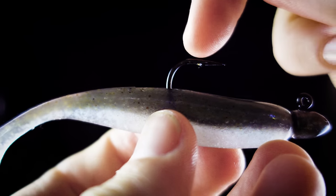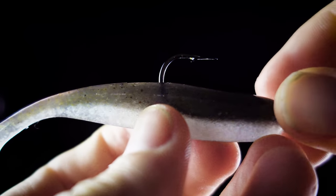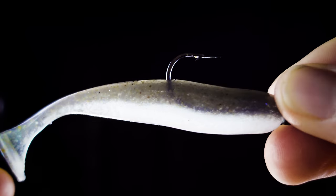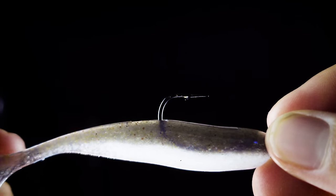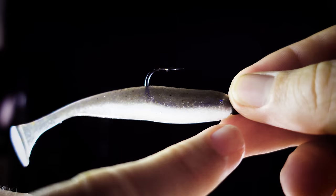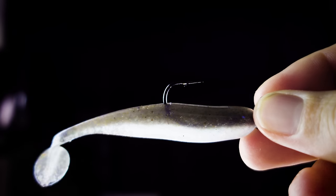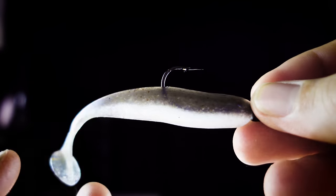So the way I choose hook sizes for plastics is just by eyeball. I look at plastic and go, okay, I reckon a 2-0 or a 3-0 is going to look good on that. I don't have a system where if I'm using a four inch plastic like this, I always use a 3-0 or anything like that. I just do it by eye.